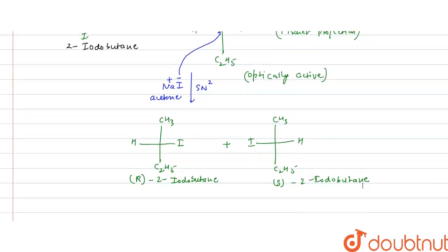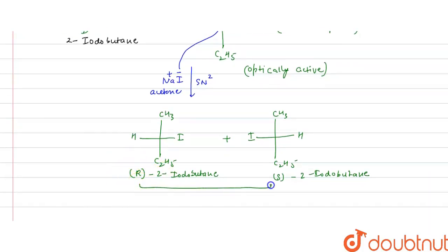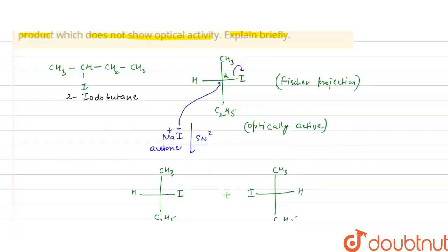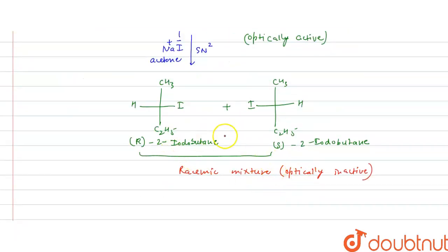So a racemic mixture is obtained, and this racemic mixture is optically inactive. Because I⁻ is both a good nucleophile and a good leaving group, repeated SN2 reactions can occur, forming equal amounts of R and S products. The racemic mixture obtained is therefore optically inactive.